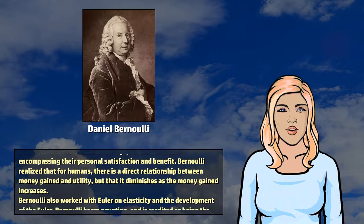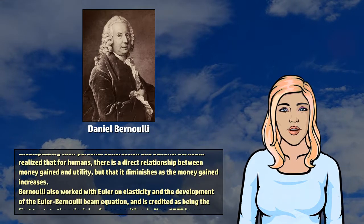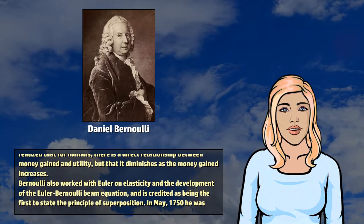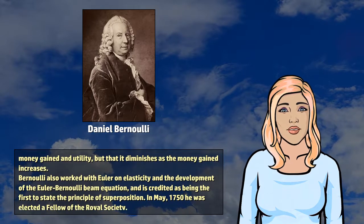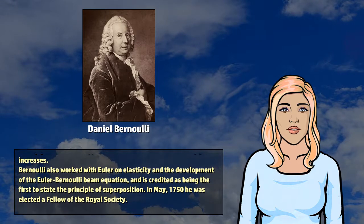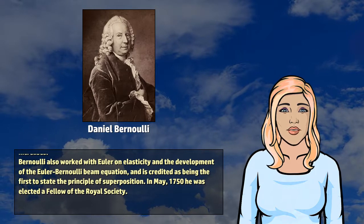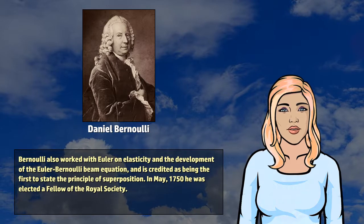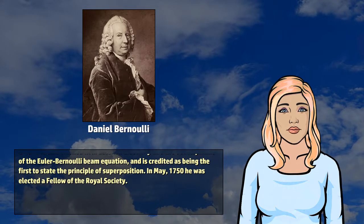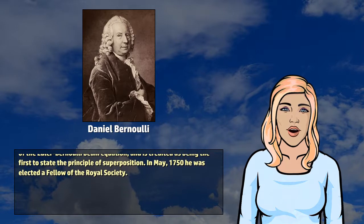Bernoulli realized that for humans, there is a direct relationship between money gained and utility, but that it diminishes as the money gained increases. Bernoulli also worked with Euler on elasticity in the development of the Euler-Bernoulli beam equation, and is credited as being the first to state the principle of superposition. In May 1750, he was elected a fellow of the Royal Society.